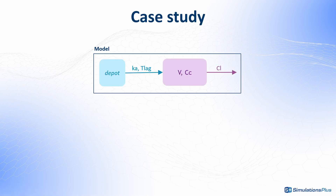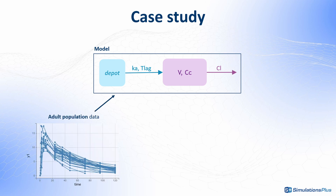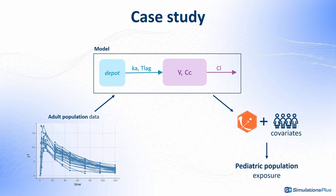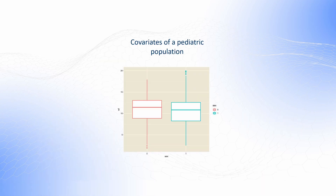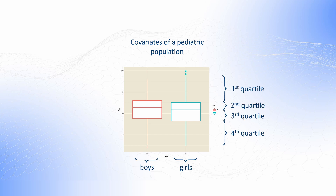Let's consider the same model we used in the previous example. The model was developed on an adult population and we would like to predict the exposure in a pediatric population. To do this, we will create simulations based on covariate values realistic for children. We assess the effect of covariates at different covariate subgroups — for example, based on the quantiles of continuous covariates and modalities of categorical covariates.